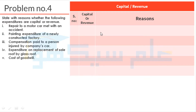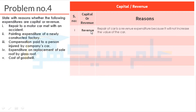We will tell the reasons and write the serial number here, along with whether it is Capital Expenditure or Revenue Expenditure, and then write the reasons. The first is Revenue Expenditure. Repair of a car is a revenue expenditure because it will not increase the value of the car.